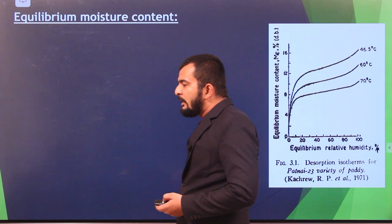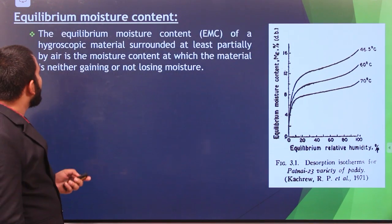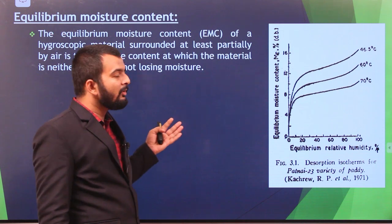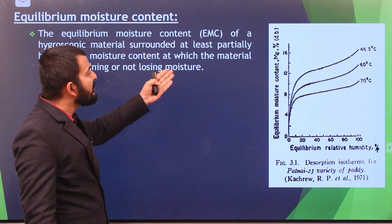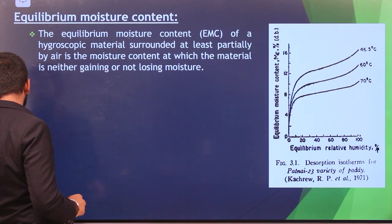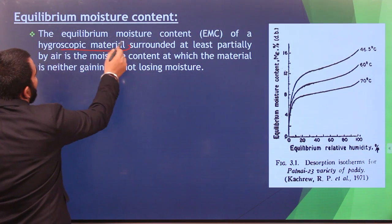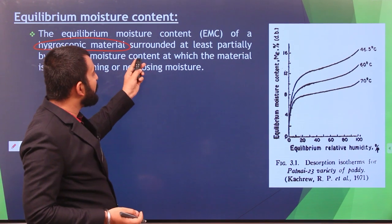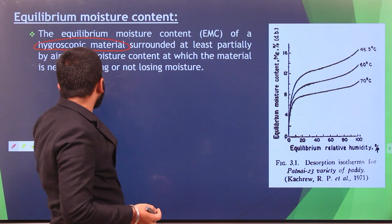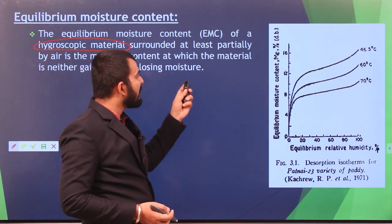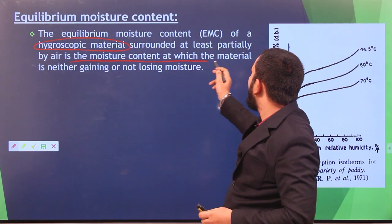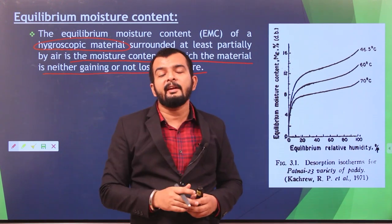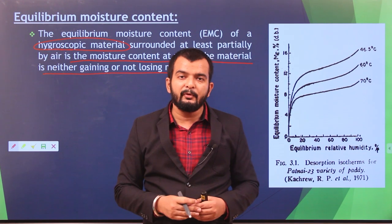The next topic is equilibrium moisture content (EMC). The EMC of a hygroscopic material — a material that can absorb moisture — surrounded at least partially by air is the moisture content at which the material is neither gaining nor losing moisture. If a dried grain is kept in open surroundings, it absorbs moisture from the air until it reaches a saturation limit where it can no longer absorb any more. This stage is called equilibrium moisture content.